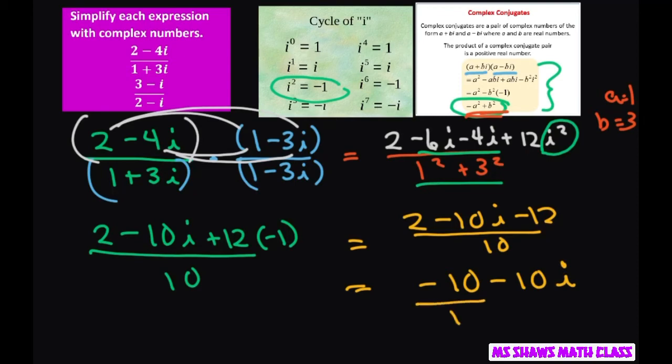And then we can divide each of these pieces by 10, and that's going to give me negative 1 minus i. So there's your final answer.